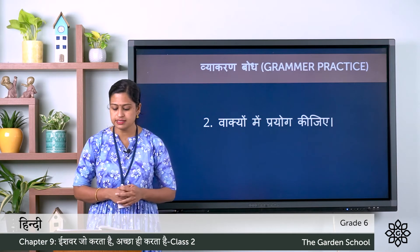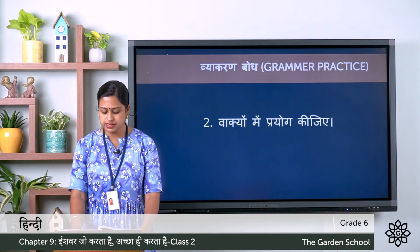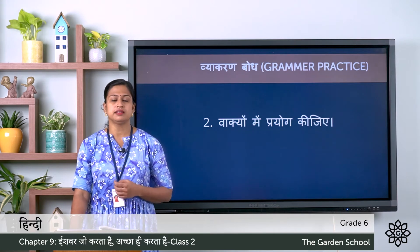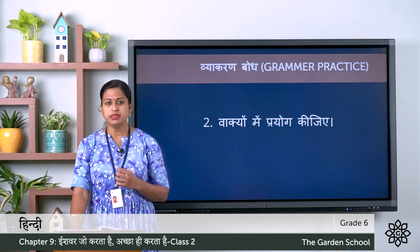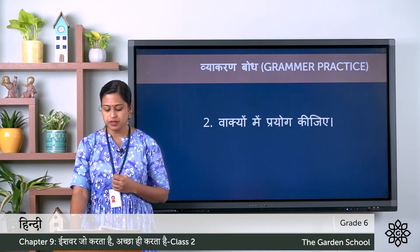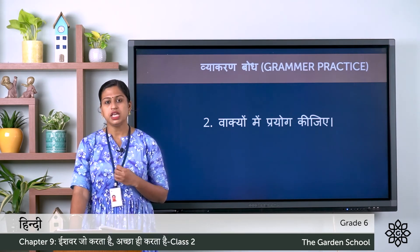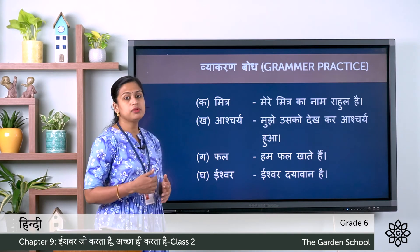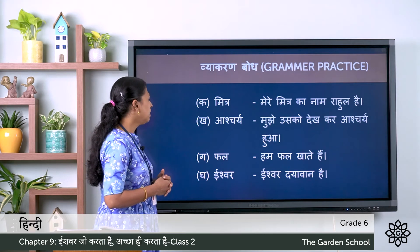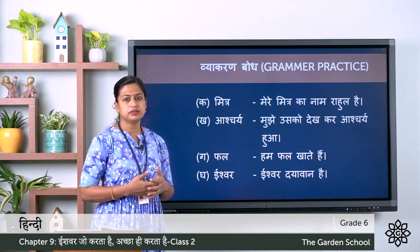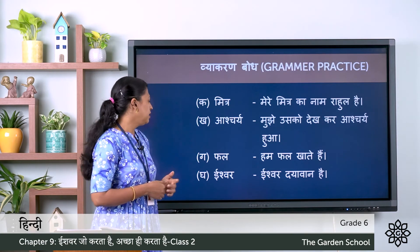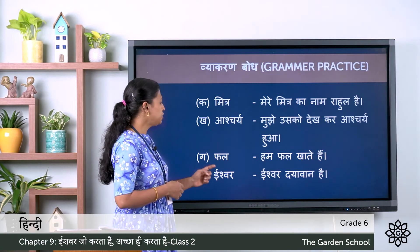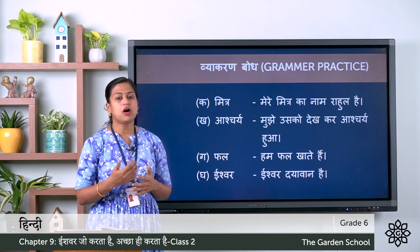So this was the first exercise of vyakaran bodh. Now the second one: vaakhyo me prayog kijiye — make sentences using the given words. The words are: ka mitra means friend, kha aashare means surprise, ga fal, ga Ishwar means God. Sentences: Mere mitra ka naam Rahul hai — my friend's name is Rahul. Mujhe usko dekkar aashare hua — I was surprised to see him. Ham fal khate hain — we eat fruits. Ishwar dayawan hai — God is kind.